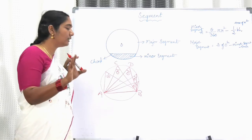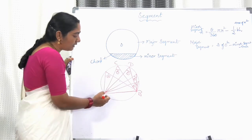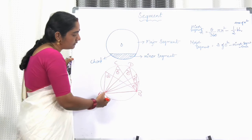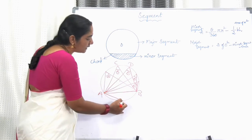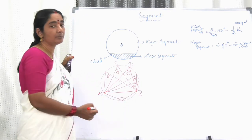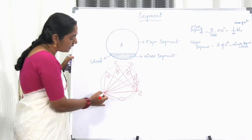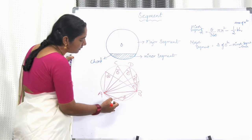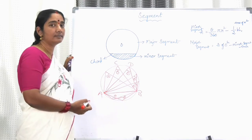The angle subtended by the same chord in the minor segment is always more than 90 degrees — it is always an obtuse angle. You take any point in the minor segment, that angle is also obtuse. All such angles in the minor segment are equal to each other.